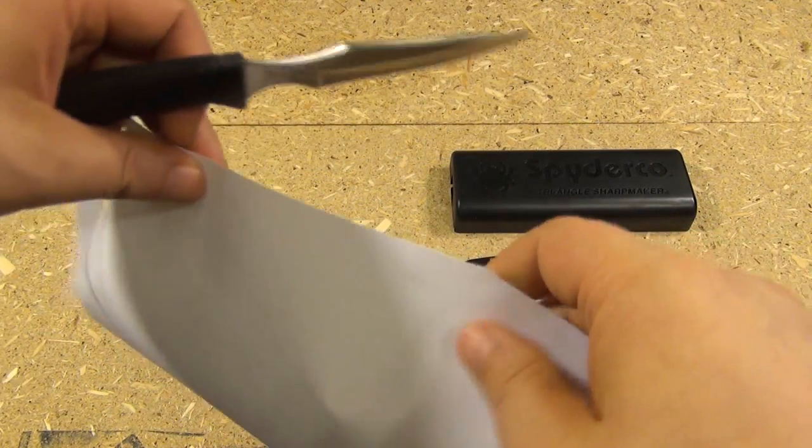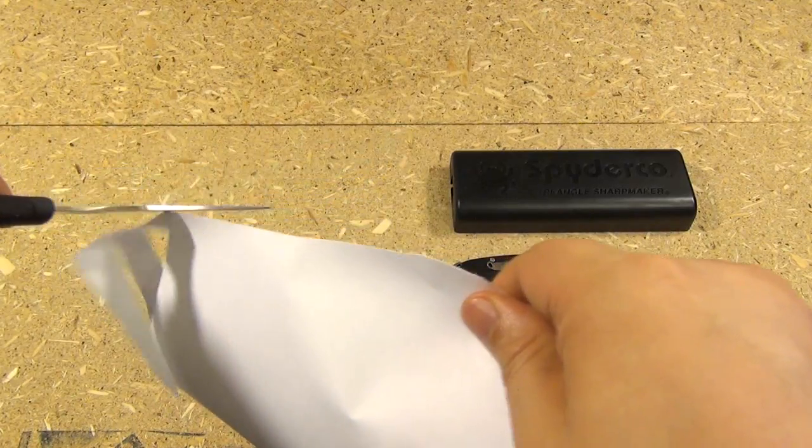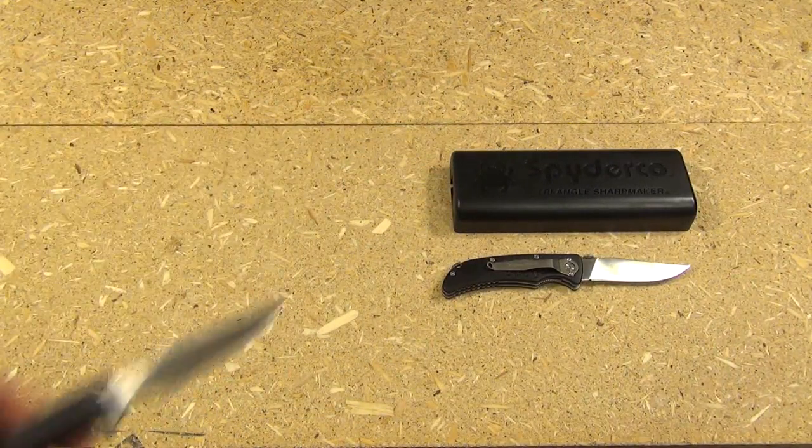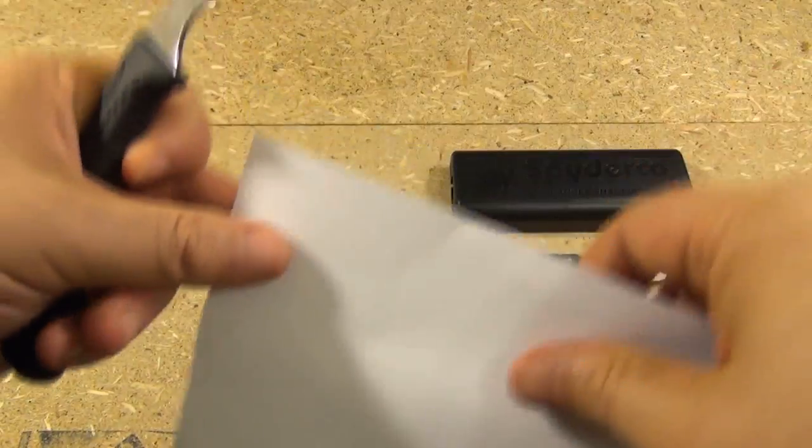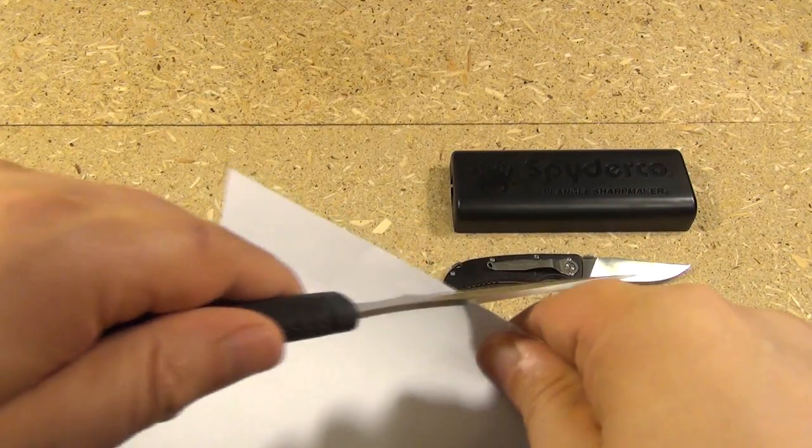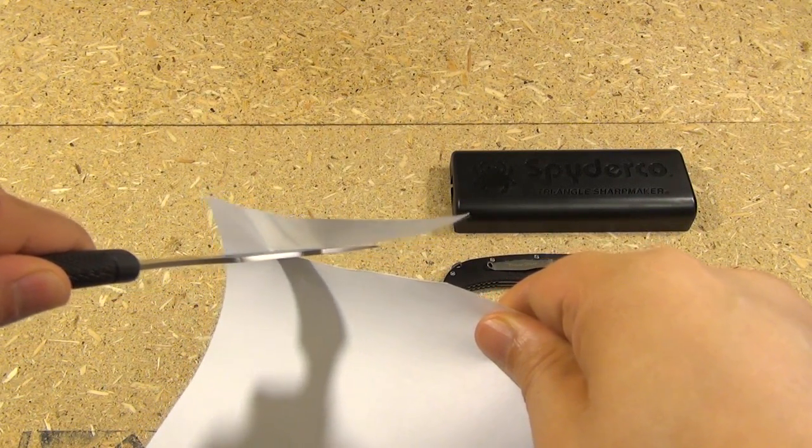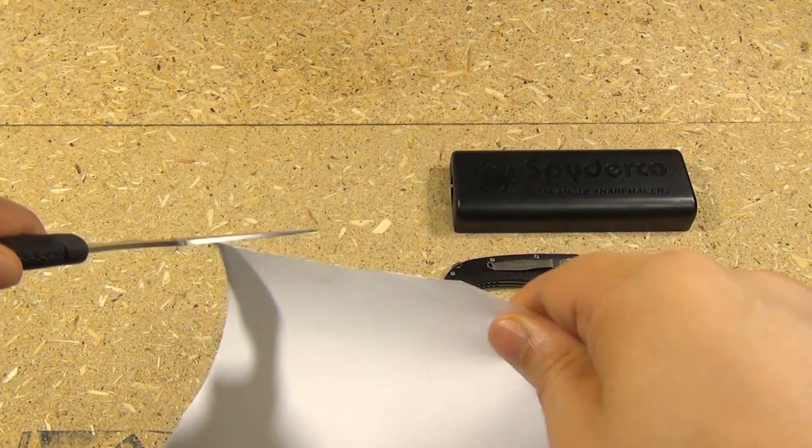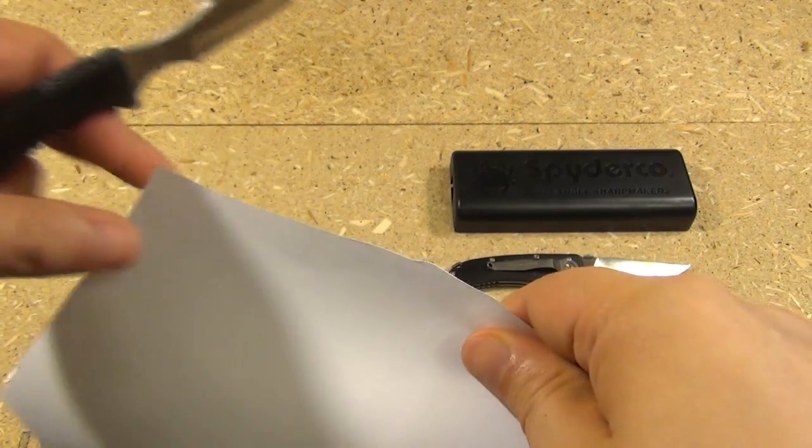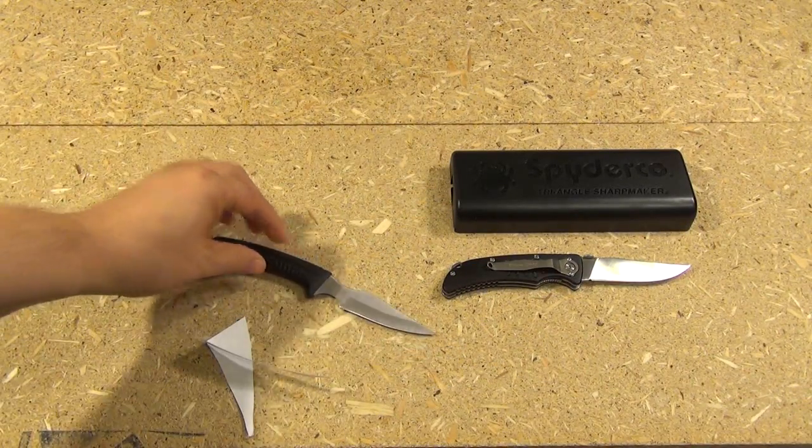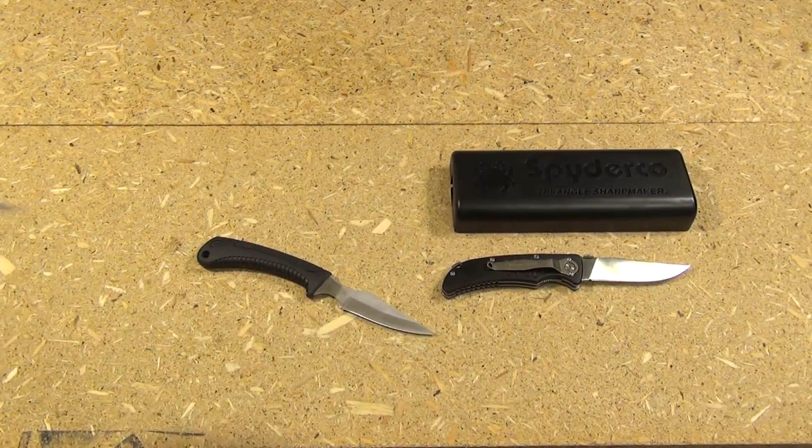That is an edge that has been produced by the Spyderco Triangle Sharp Maker. I'm sure you've heard they try to do it, you know, a super slow cut. Super slow, fast, doesn't matter.